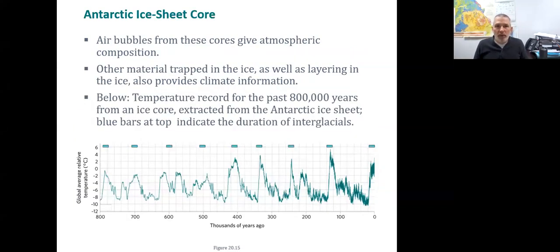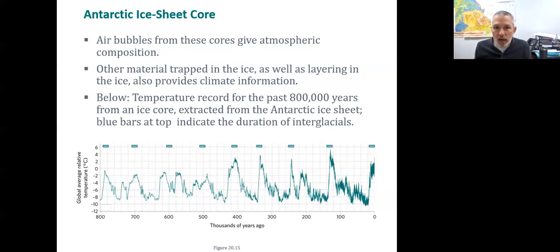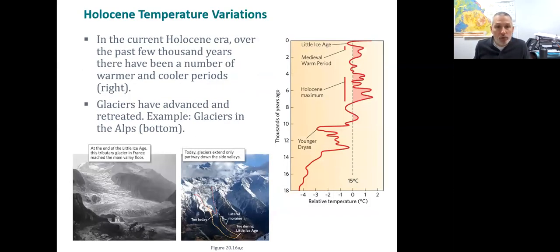Looking at the bubbles in Arctic ice sheet cores, we have quite a bit of variation that directly coincides with those ice ages and interglacials. From about 15,000 years ago to a little over 100,000 years ago was an ice age, then an interglacial, ice age, interglacial — cycling back and forth. That's what we're seeing in the ice record.